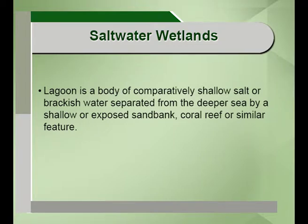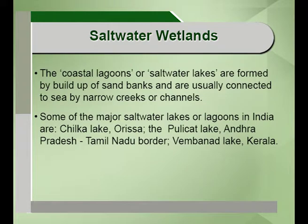The salt water wetlands — lagoons are bodies of comparatively shallow salt or brackish water, separated from the deeper sea by a shallow or exposed sand bank, coral reef or similar feature. Coastal lagoons or salt water lakes are formed by the build-up of sand banks and are usually connected to the sea by narrow creeks or channels. Some of the major salt lakes in India include Chilika Lake in Odisha, Pulicat Lake in Andhra Pradesh, and Vembanad Lake in Kerala, which contains endemic varieties of fishes.